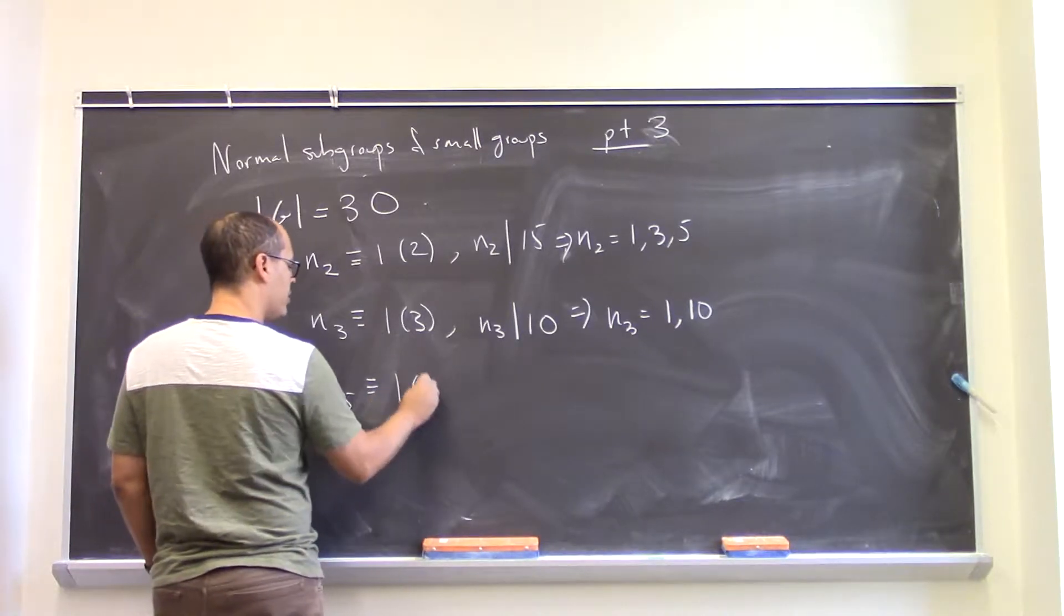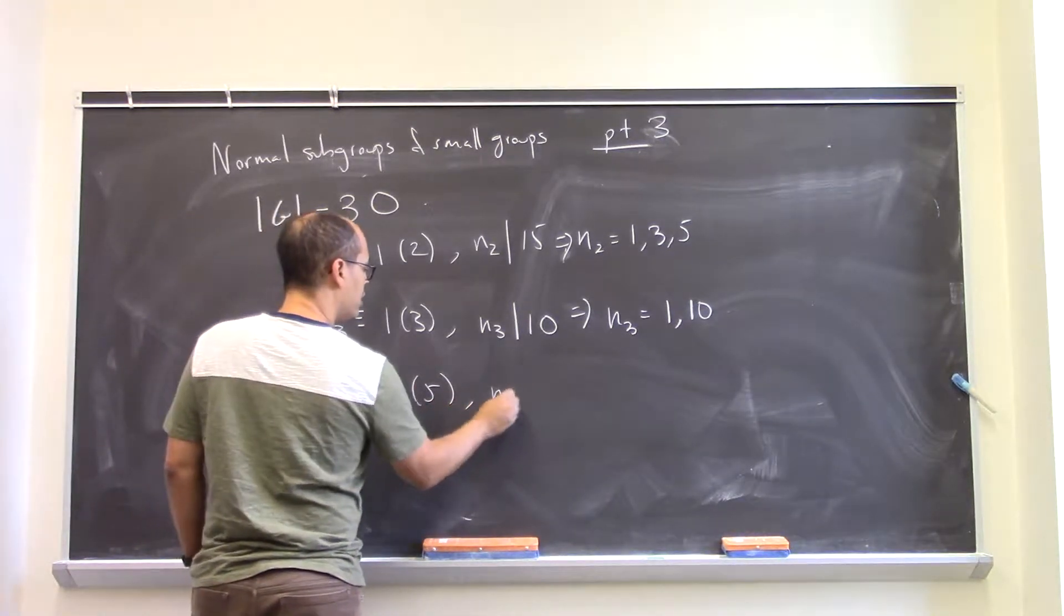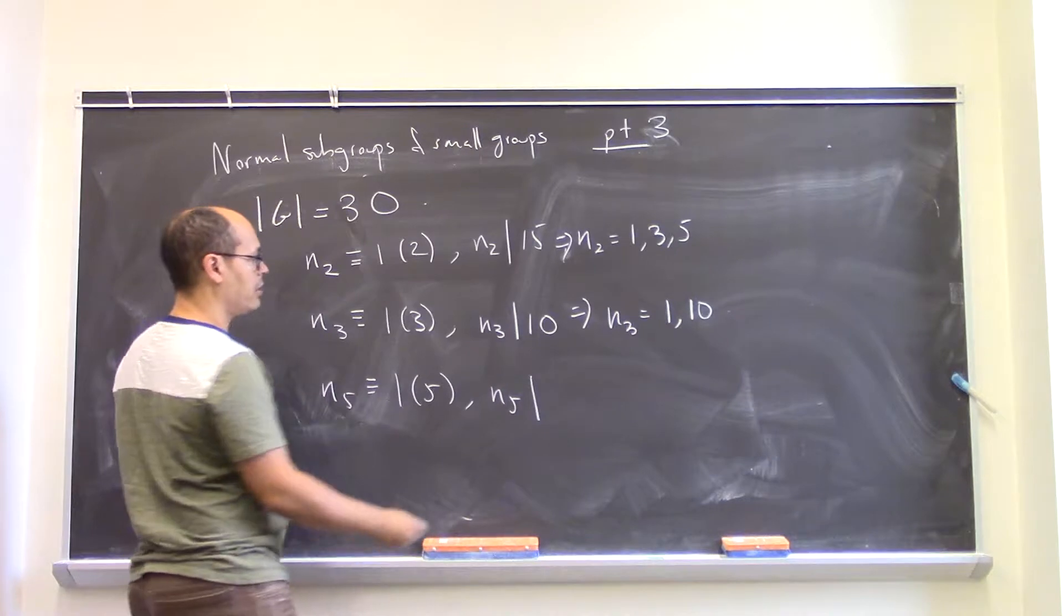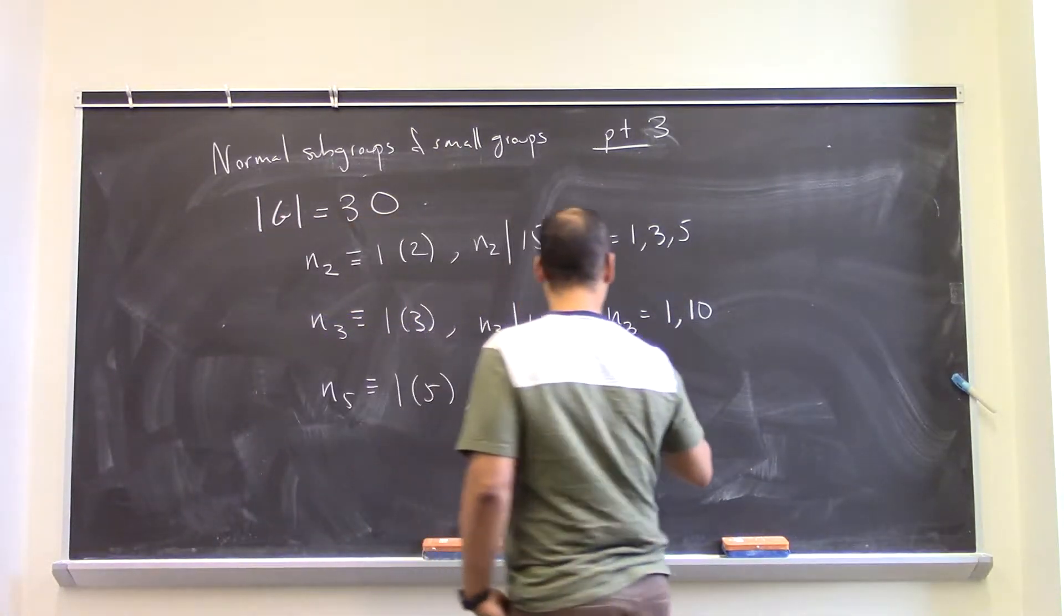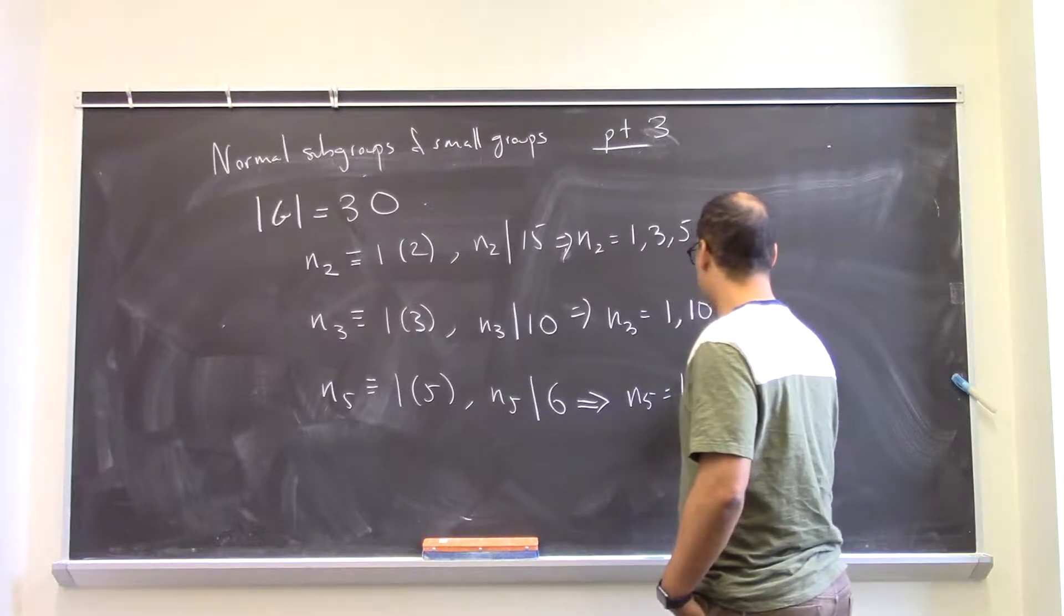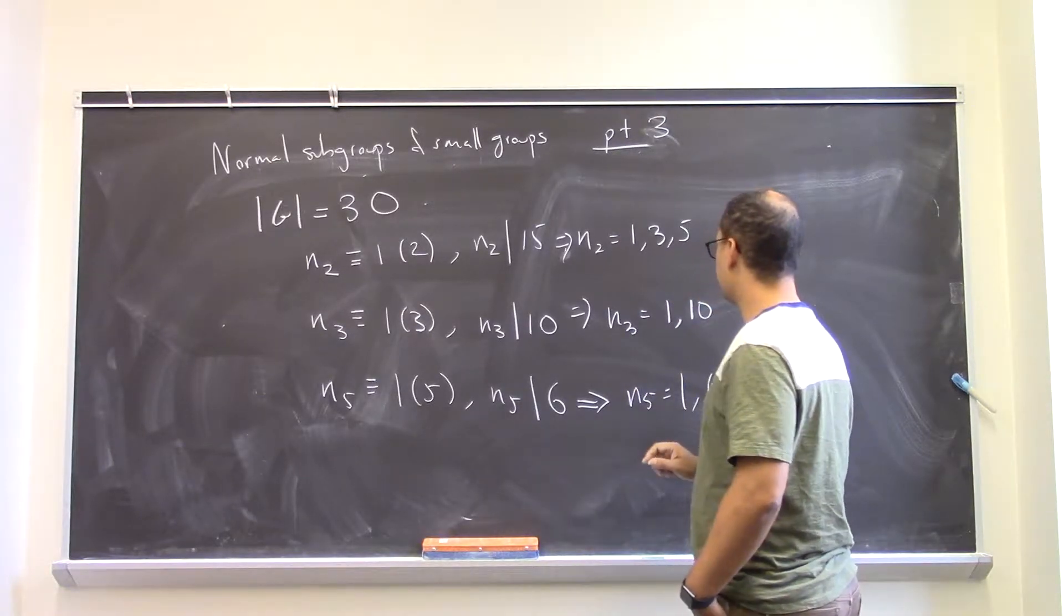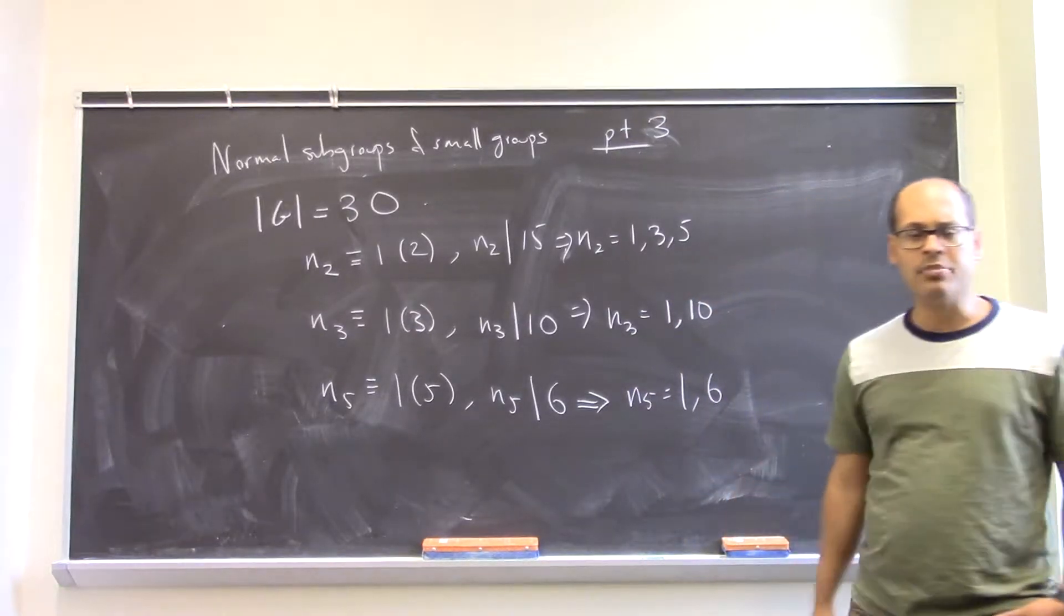N5, 1 more than a multiple of 5. N5 is now going to be a divisor of 6, which gives me again two possibilities. N5 could be 1 or 6. There's a lot of possibilities here.